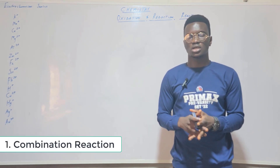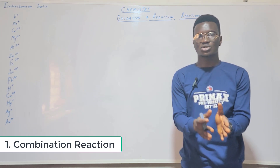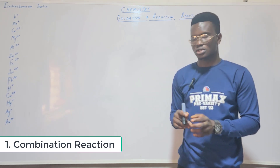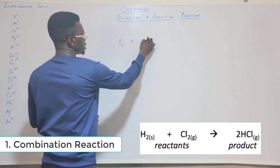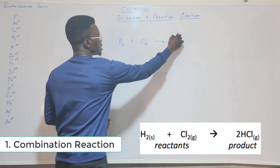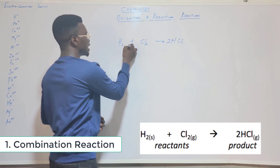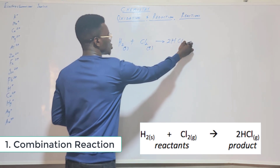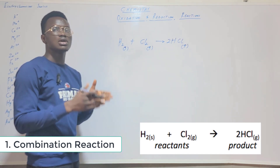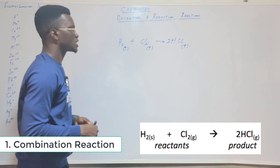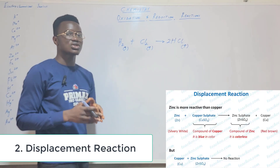The first type is combination reaction — when one substance reacts with another to give a particular product. For example, hydrogen gas reacting with chlorine gas gives HCl. When balanced, you get 2HCl. So hydrogen gas directly combines with chlorine to give hydrogen chloride gas. This is called a combination reaction.